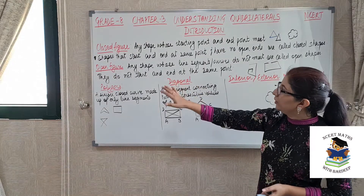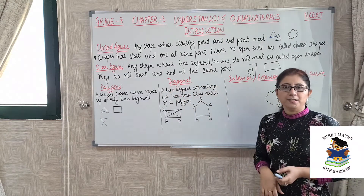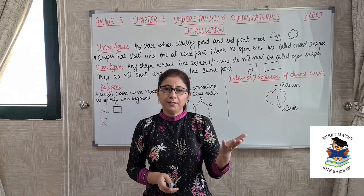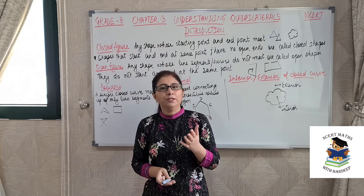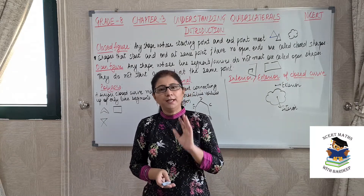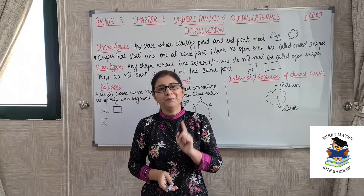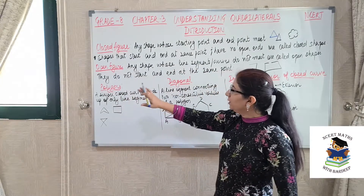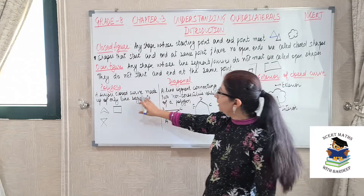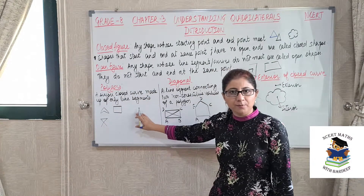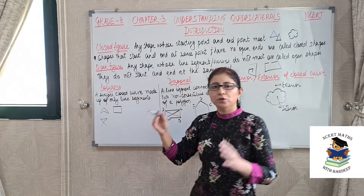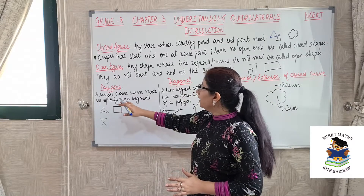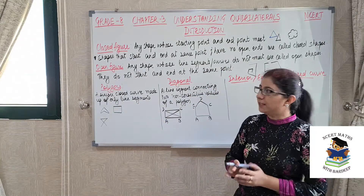So we can say that any shape whose starting point and ending point is same is called a closed figure, but whose starting point and ending point are not same is an open figure. Next is polygons — a simple closed curve made up of only line segments. The first thing is it should be closed, meaning its starting point and ending point should be same. And second is it should be made up of only line segments.